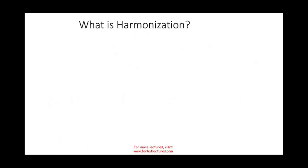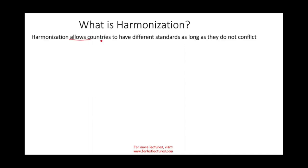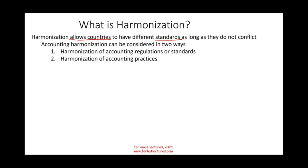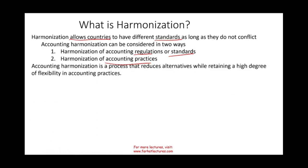So what is accounting harmonization? Accounting harmonization is when you allow countries to have different standards as long as they don't conflict. We can look at harmonization in two ways: harmonization of accounting regulation or standards, and harmonization of accounting practices. Standards and regulations are what's written down, but practices may differ even when rules are the same. Harmonization is a process that reduces alternatives while retaining a high degree of flexibility in accounting.